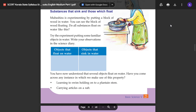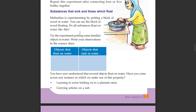Substances that float and those which sink. This is the experiment of putting a block of wood in water — the experiment of observation. You can see the block of wood floating. Do all substances float on water like this? Try the experiment by putting some familiar objects in water and record your observations in the science diary.